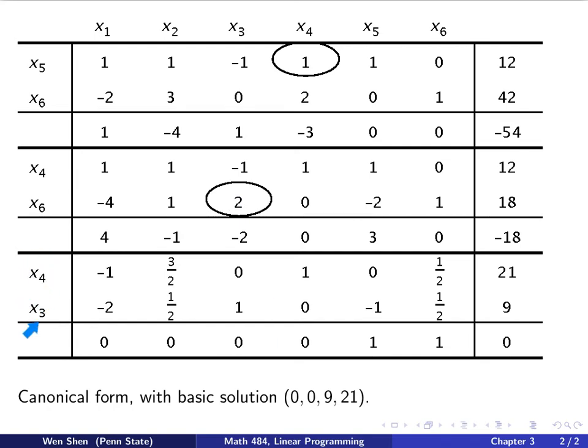Pay attention that the basic variables are changed. We switch x5 and x6 completely with x3 and x4. The third part of the tableau is obtained after you click. Let's look at the coefficients on the objective function. We see 1 and 1, and everywhere else is 0. Nothing is negative, so we conclude the minimum is obtained: W minimum is 0, obtained at this constraint in canonical form where x4 is 21, x3 is 9, x1 and x2 are 0.